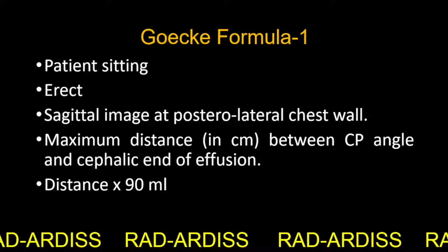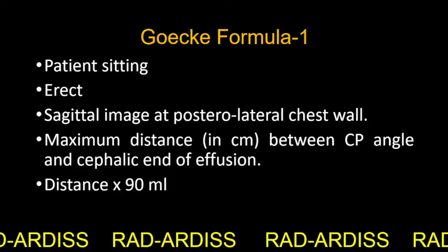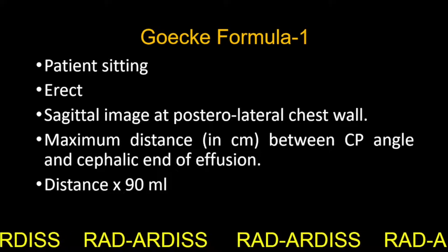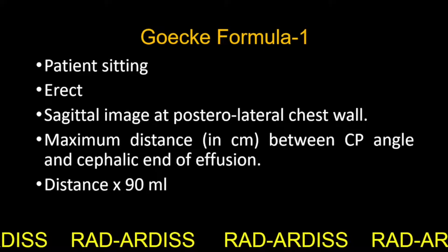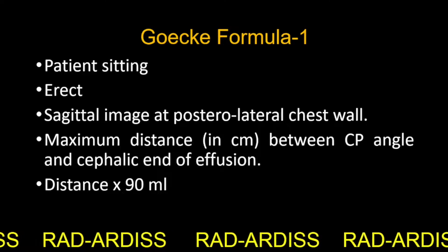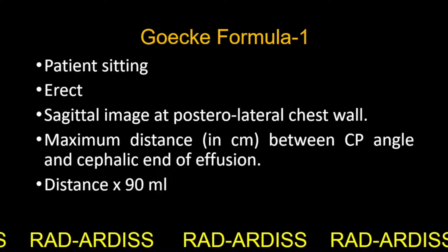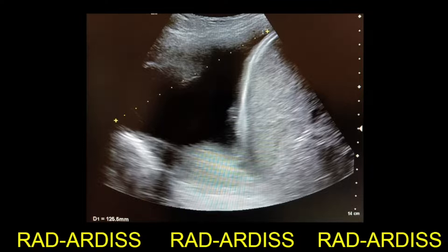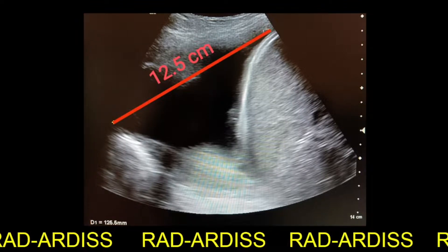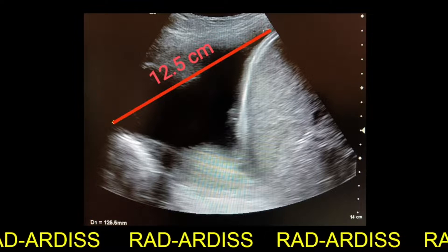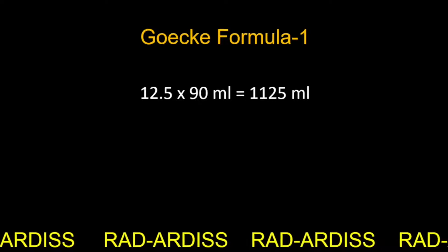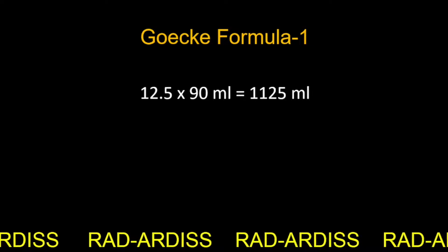Proceeding towards the next formula, that is the Goiki formula number 1. Here the patient is sitting in the erect position and a sagittal image is taken at the posterolateral chest wall. The maximum distance between the CP angle and the caudal end of the effusion at the base of the lung is taken. This distance in centimeters is multiplied by 90, and that gives the amount of effusion. In our case, this distance comes out to be 12.5 cm, so according to Goiki formula number 1, the effusion fluid comes out to be 1125 ml.